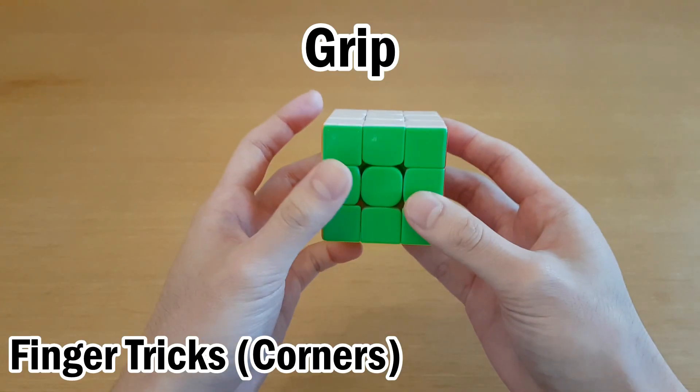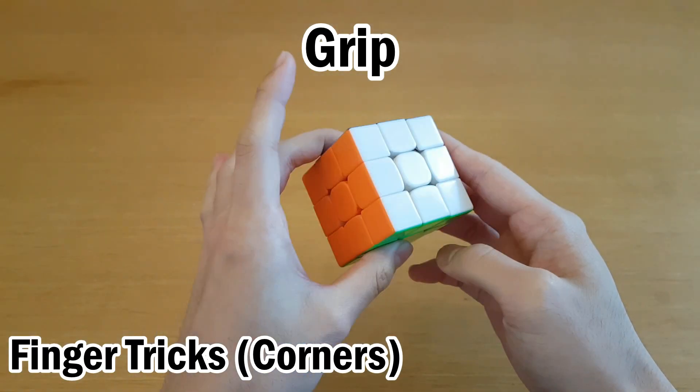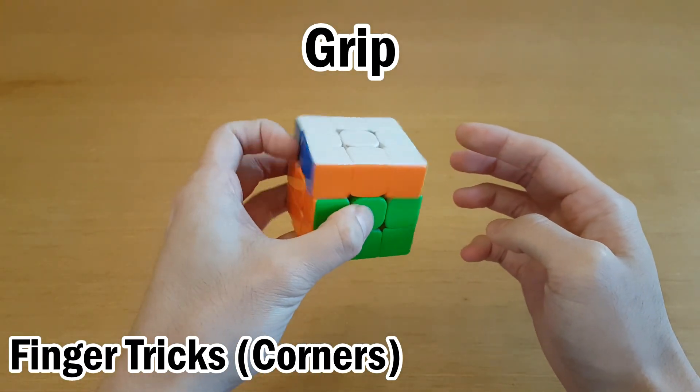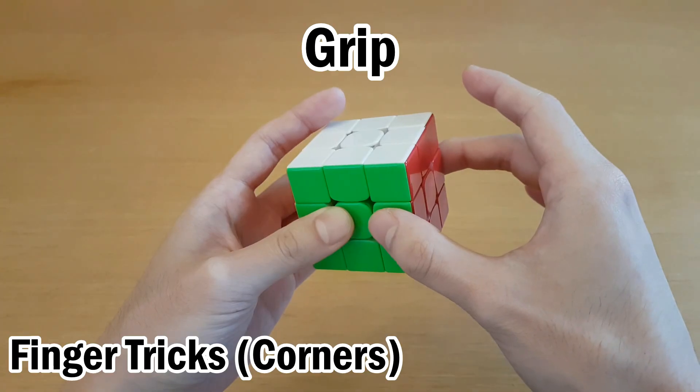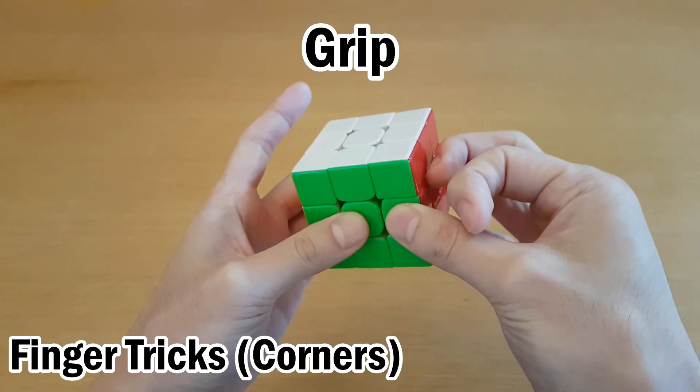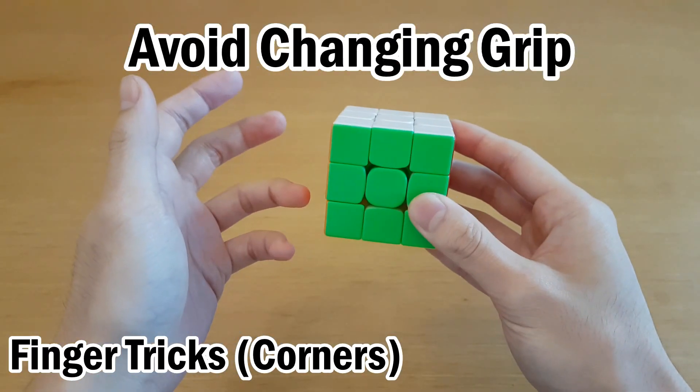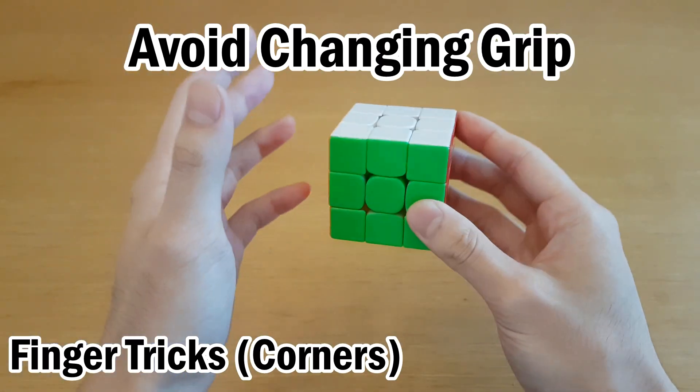Next is good finger tricks. During corners, your grip should mostly be the same. You want your left middle finger holding the cube. That way, you can do D moves and U moves. Your right hand can hold the right side with the middle finger or the ring finger, depending on what it needs to do. If you need to do U2, you hold it with your ring finger. And if you have to do D moves, you hold it with the middle finger. And you want to optimize commutators in a way where you do not have to change grip a lot.